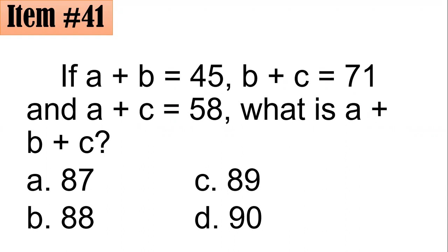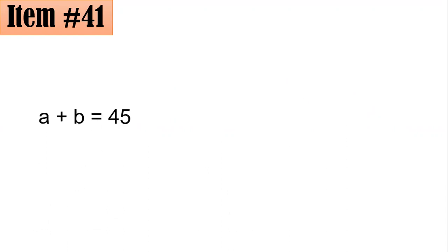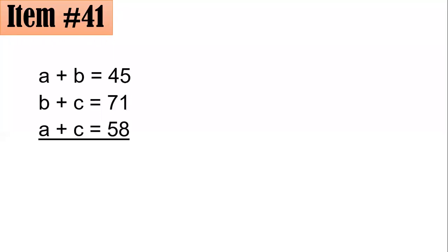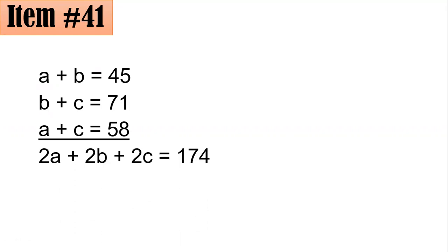To solve this, we employ addition on these three equations. The sum of all terms on the left side should equal the sum of all terms on the right-hand side. On the left side, there are two A's, two B's, and two C's. So on the left-hand side, the sum is 2A plus 2B plus 2C, which equals the sum on the right-hand side: 45 plus 71 plus 58, which is 174.